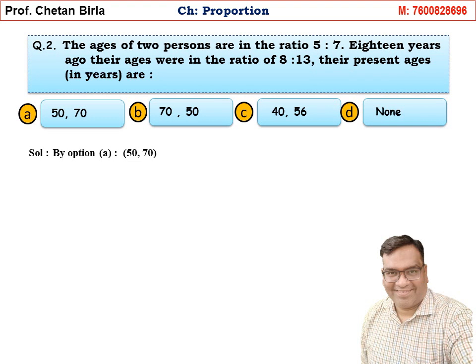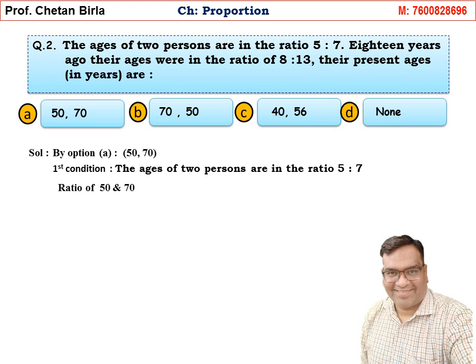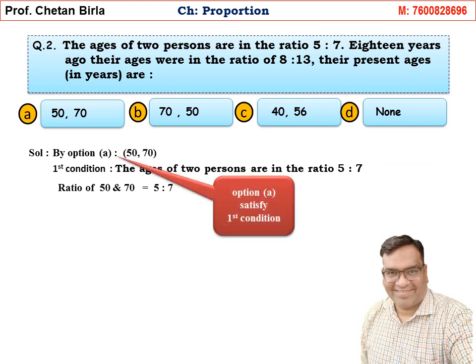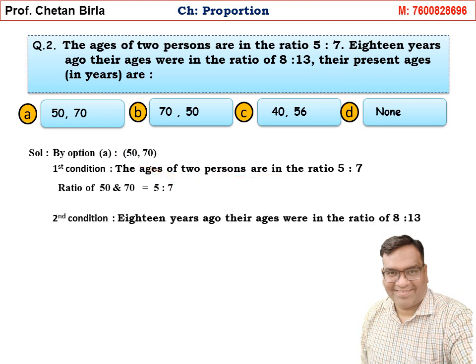Solution by option method: Option A gives 50 and 70. First condition — the ages of the 2 persons are in the ratio 5 is to 7. The ratio of 50 and 70 is 5 is to 7 — satisfied. Second condition: 18 years ago, their ages were in the ratio 8 is to 13. So 50 − 18 = 32 and 70 − 18 = 52.